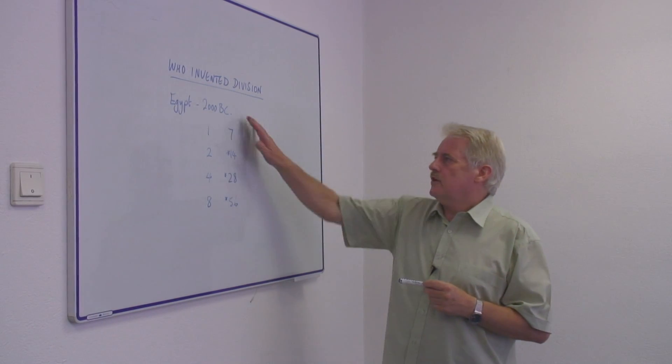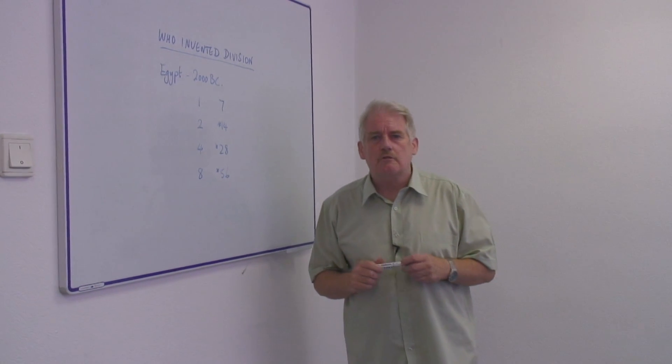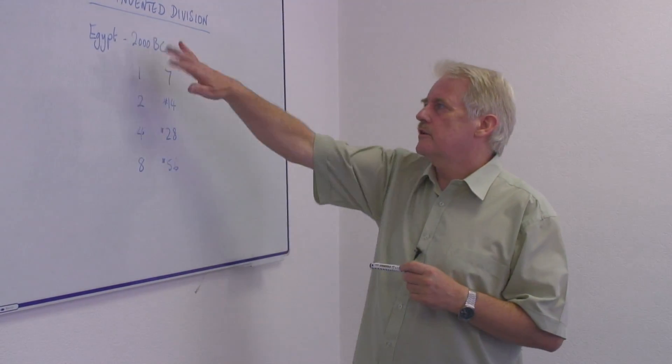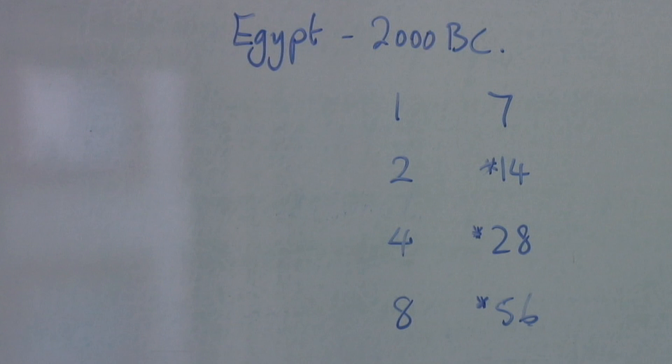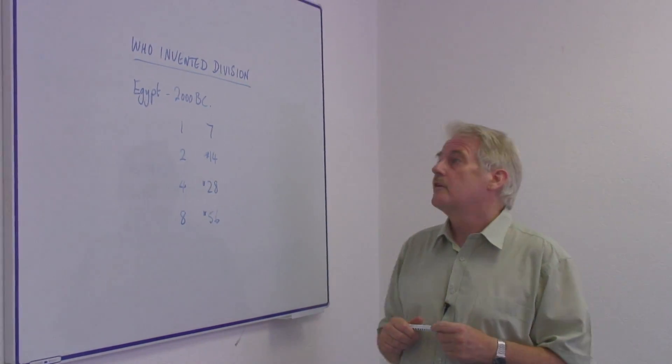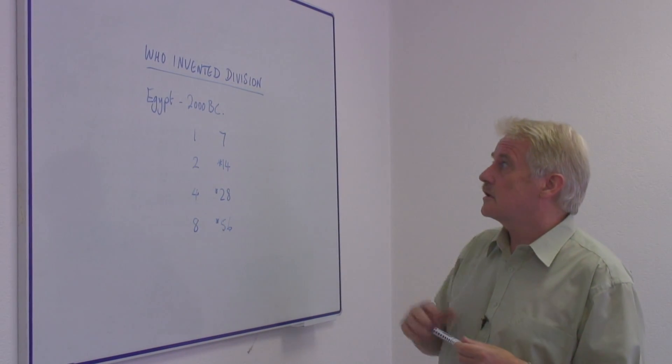We know that the Egyptians and the Babylonians and the Romans and the Greeks were doing a lot of mathematics around this kind of time, around 2000 BC. So, obviously at the time they must have had methods of doing these tasks like division.